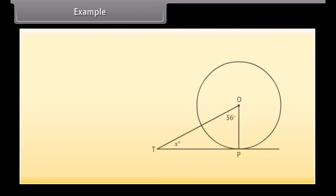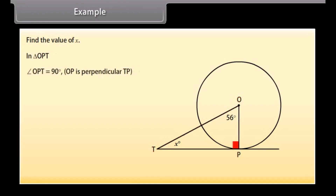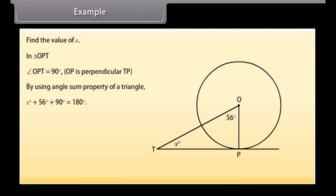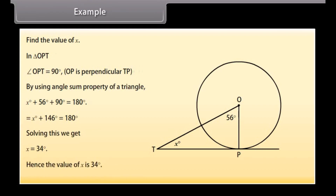Example. Look at the figure given and find the value of X. In triangle OPT, angle OPT is 90° because OP is perpendicular to TP. By using the angle sum property of a triangle: X° + 56° + 90° = 180°. This gives X + 146° = 180°. Solving this, we get X = 34°. Hence the value of X is 34°.